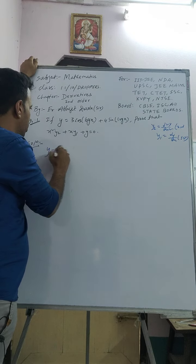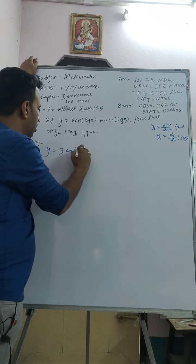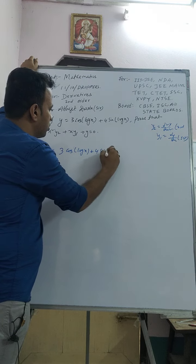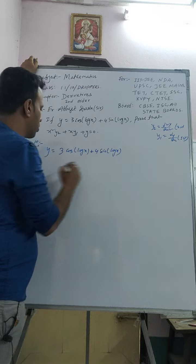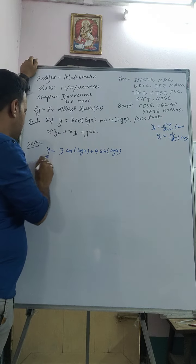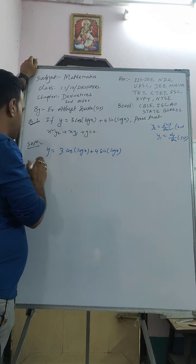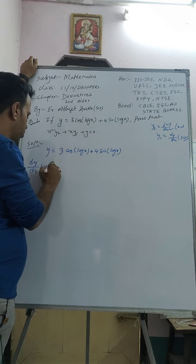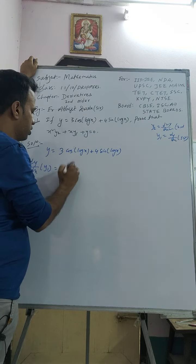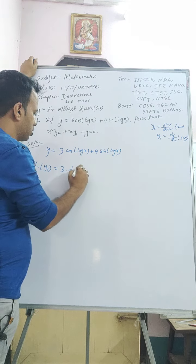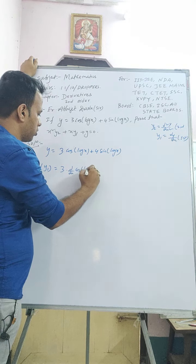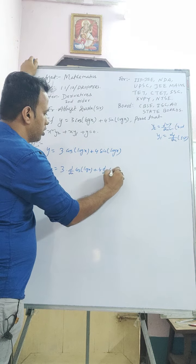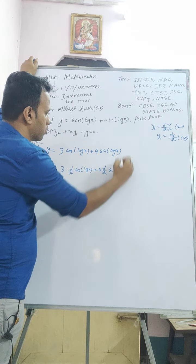Given: y = 3cos(log x) + 4sin(log x). Now differentiate with respect to x. It will become dy/dx, that is y₁, equal to 3·(d/dx)cos(log x) + 4·(d/dx)sin(log x).